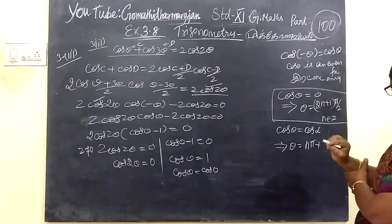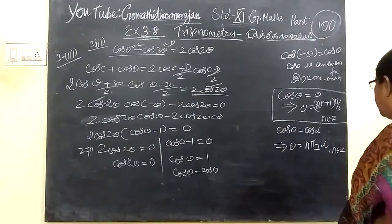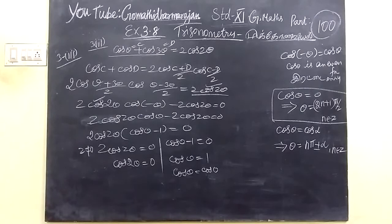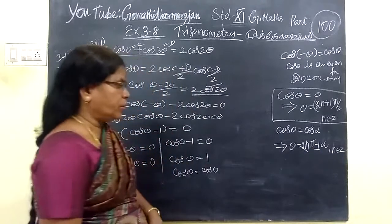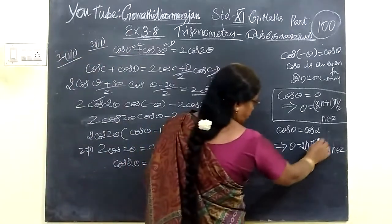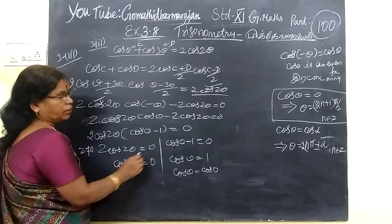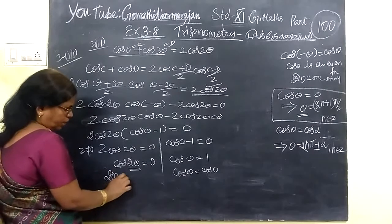Cos θ equals 0 is 2n plus 1 times π/2. So in that way, θ equals 2n plus 1, but it is 2θ, so you write 2θ equals (2n plus 1)π/2 where n belongs to integers.